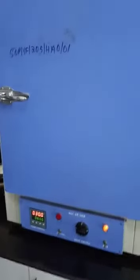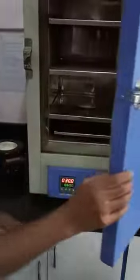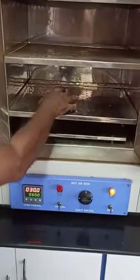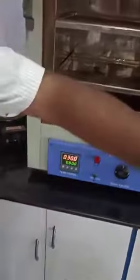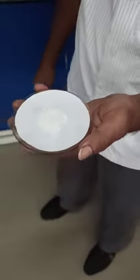After half an hour is completed, we will take out the aspirin from the oven. Now we will take out the synthesized aspirin. The aspirin is dried completely — we got the white powder. Now we have to weigh how much powder we have synthesized; we will weigh this aspirin.